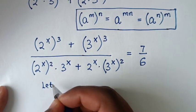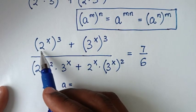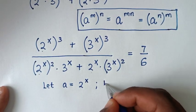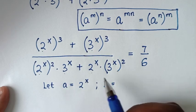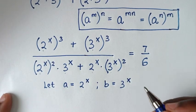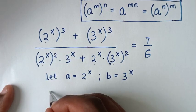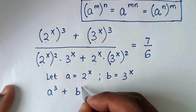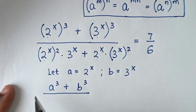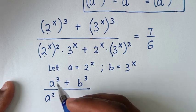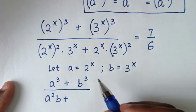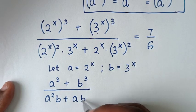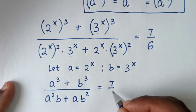In the next step, we let a = 2^x and b = 3^x. Then the expression becomes (a³ + b³) over (a²b + ab²) is equal to 7/6.